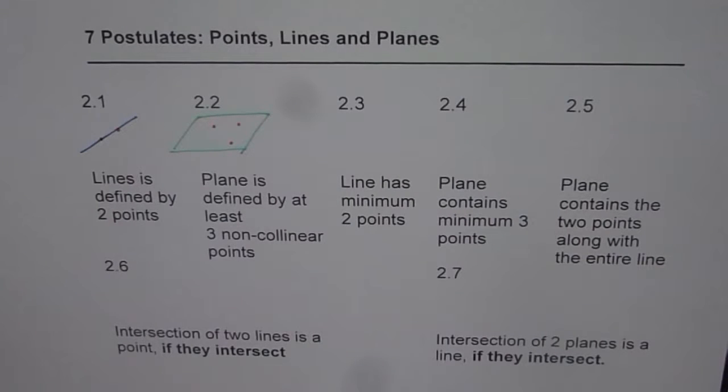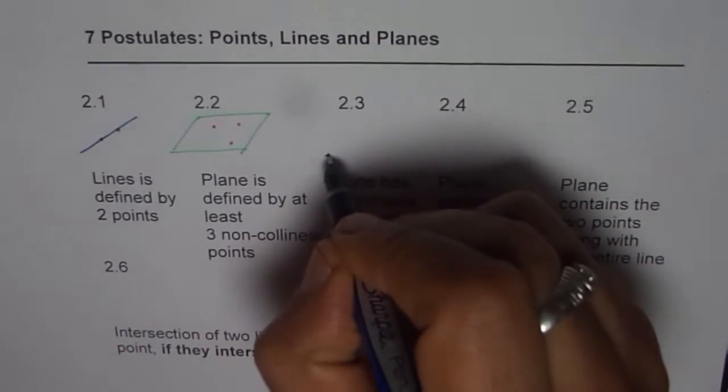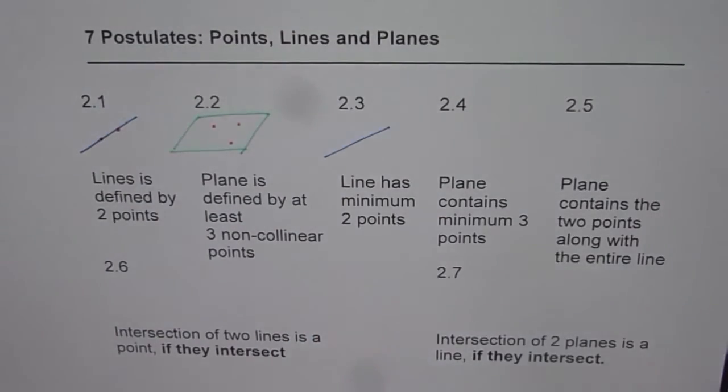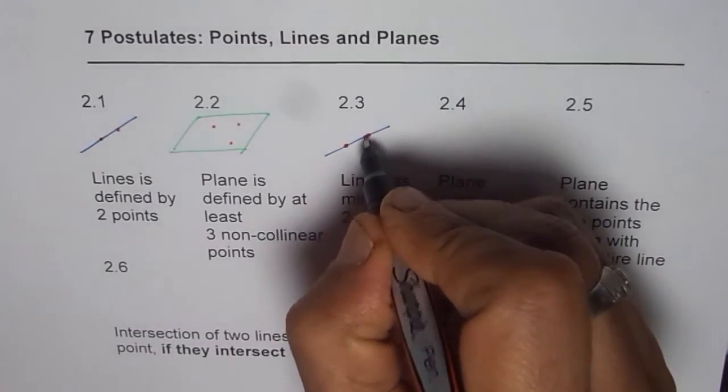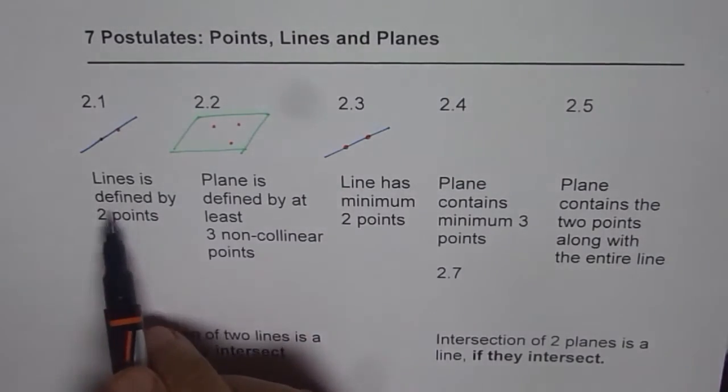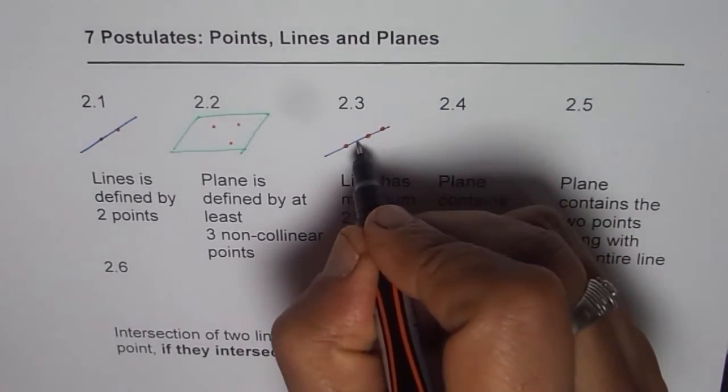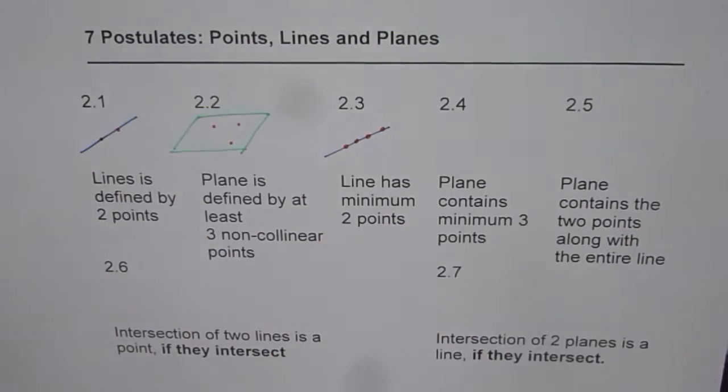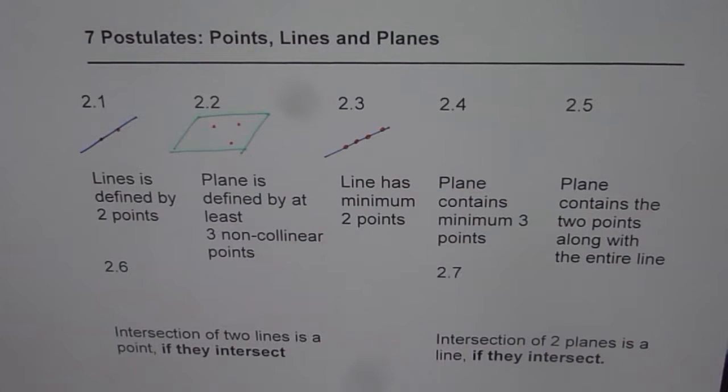The third one is about minimum number of points on a line. It says if there is a line then on that line minimum two points are there. Because those two points have defined the line, that is what we learned in one. But there are many more points on this. In fact there are infinite number of collinear points. That makes a line.